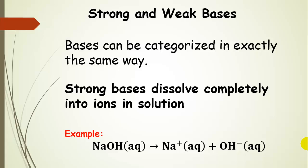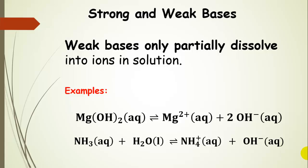We can also categorize bases this way. Strong bases dissolve completely into ions in solution — for example, sodium hydroxide in water gives sodium cations and hydroxide anions. Weak bases only partially dissolve, setting up an equilibrium. Magnesium hydroxide is partially dissociated, and ammonia in water also sets up an equilibrium. So ammonia and magnesium hydroxide are both weak bases.